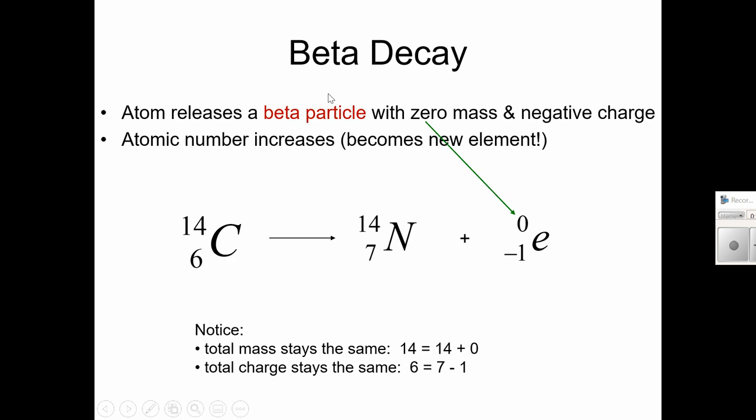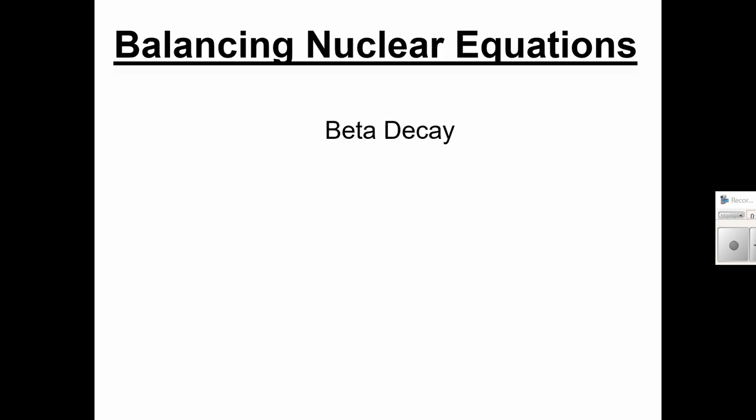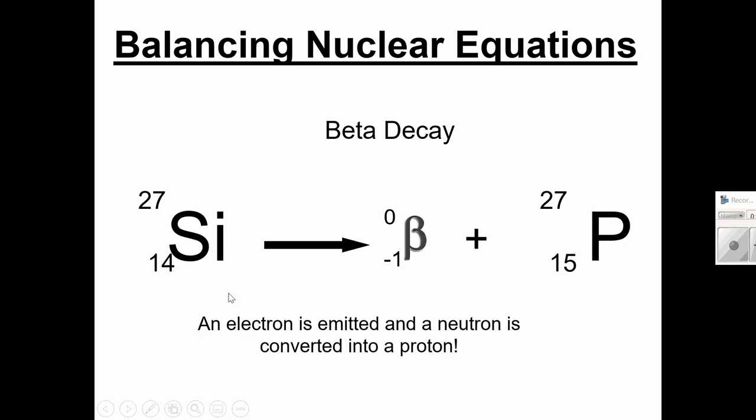Okay, and then let's look at a beta decay reaction. We've got a carbon-14 that is emitting this beta particle, and the mass stays the same, and the number of protons goes up by one. Every time there's beta decay, that's the same pattern. Okay, so you try. There's another reaction started for you, so go ahead and pause the video and see if you can do that one. Okay, let's take a look. Silicon-27, mass stays the same, but the number of protons goes up by one. It changes into a phosphorus atom when a beta particle is emitted.